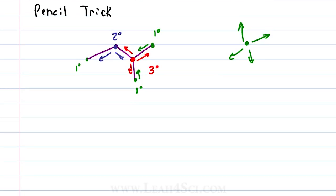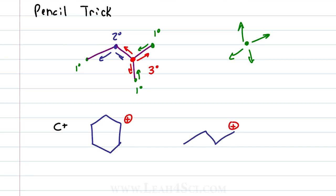This trick works anytime you need to classify carbon atoms, not just in a standard chain. For example, say you have a molecule with a carbocation and you're trying to determine which carbocation is more stable. The more substituted, the more stable. So how do we figure this out? Put your pencil down — we have two bonds coming out of it, so this is a secondary carbocation. On the right, put your pencil down — one line coming out of it, this is a primary carbocation.